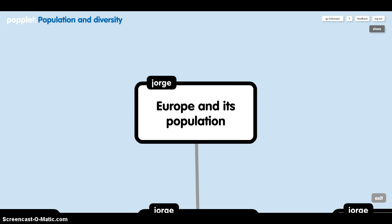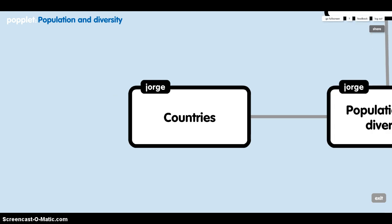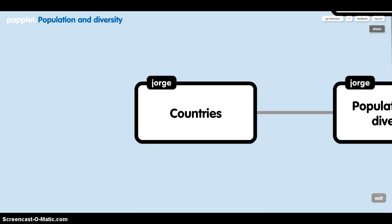However, the population density varies greatly from one region to another. There are 48 independent nations in Europe. Some countries such as Macedonia and Belarus became independent recently.